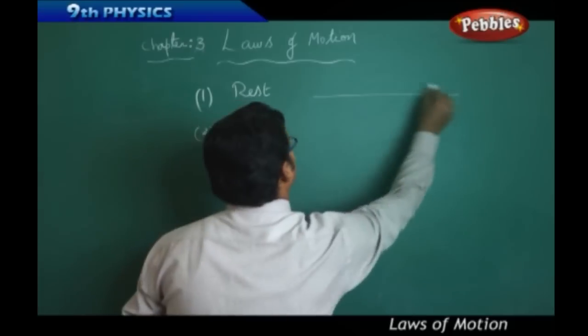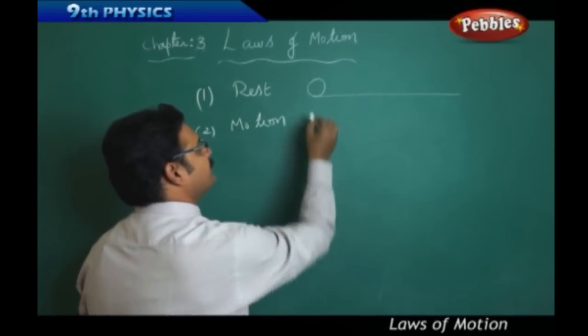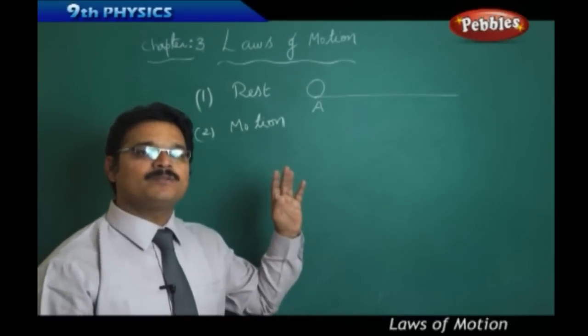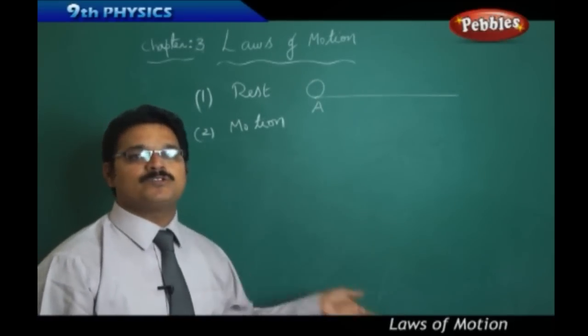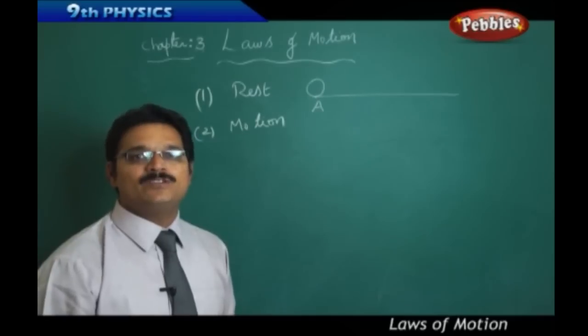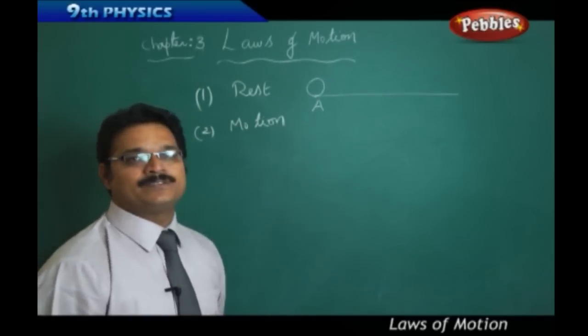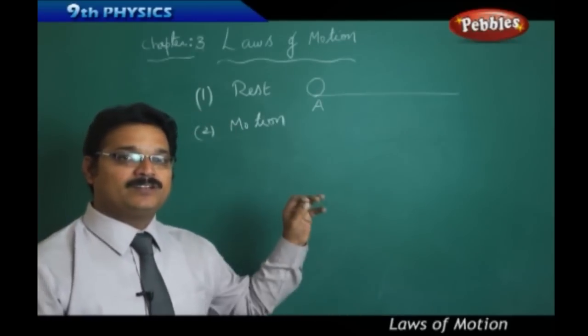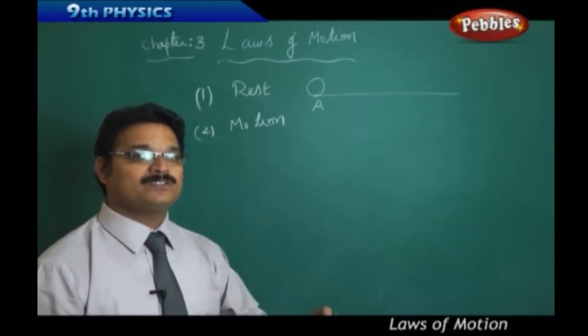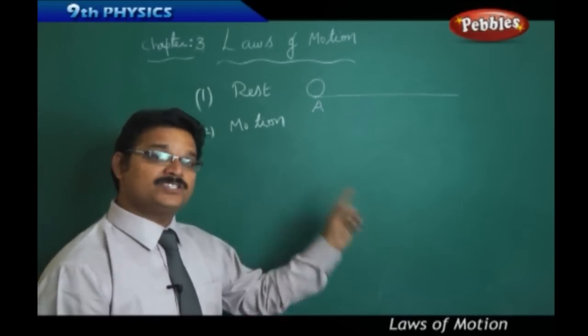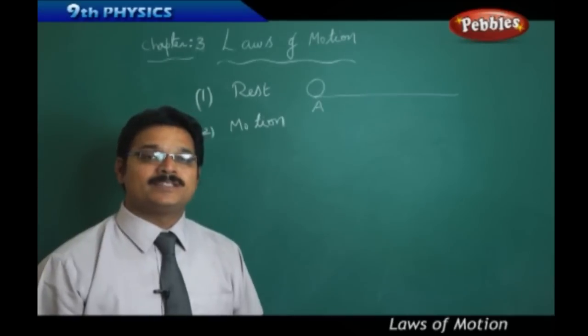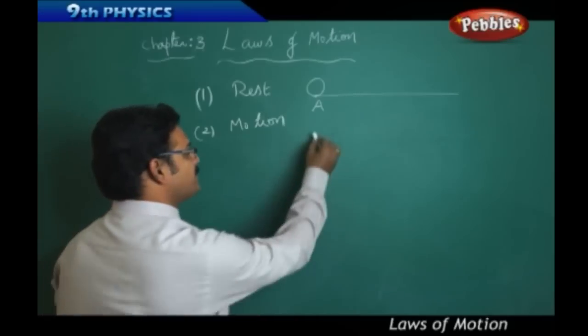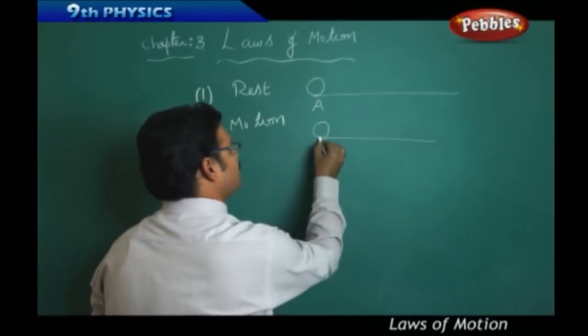For example, take a ball at point A. You are observing the ball at point A for long time - two hours, three hours, one day, two days. Then you say that ball is at rest. If the location is changing with respect to time, then it is called motion.